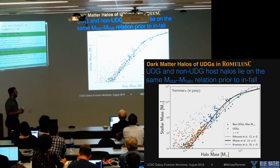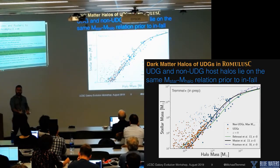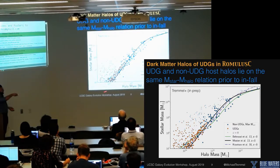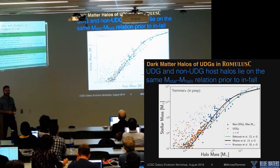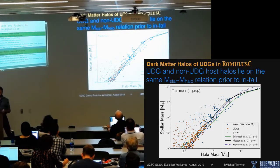Maybe there's something special about their dark matter halos. We trace the galaxies back in time to when they just fell into the cluster, before their dark matter halos have been stripped at all. Looking at maximum halo mass and stellar mass at that time, UDGs in orange and non-UDGs in blue all lie on the same stellar mass-halo mass relation. They're all normal, average galaxies.